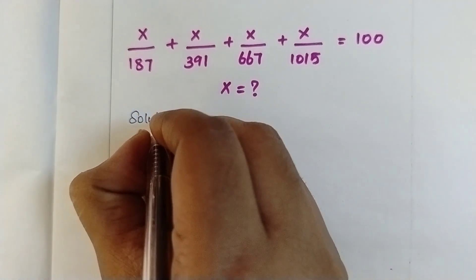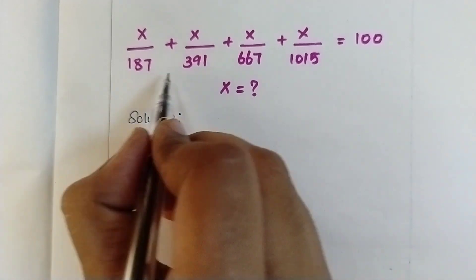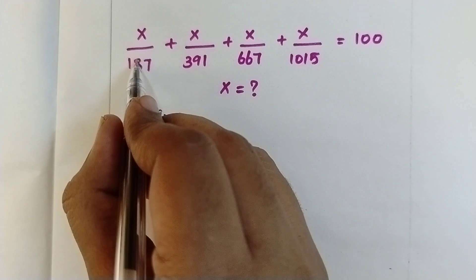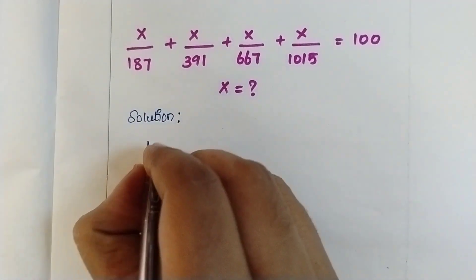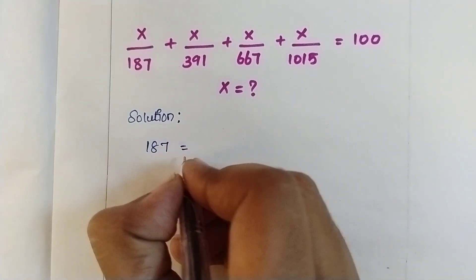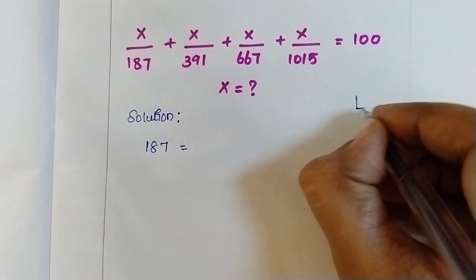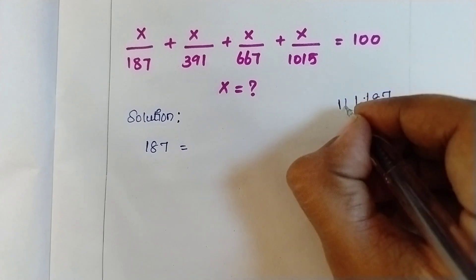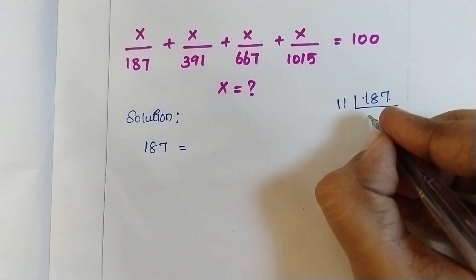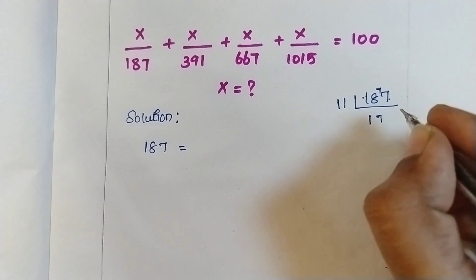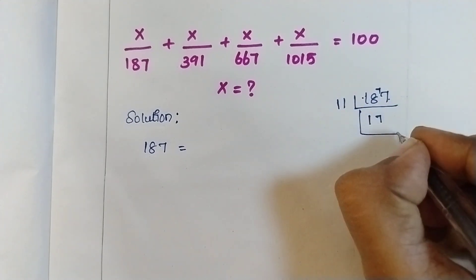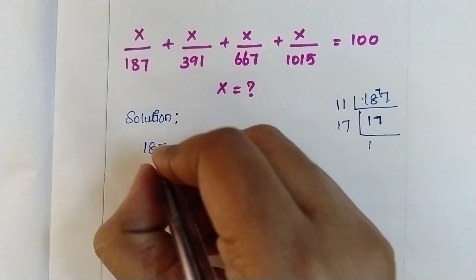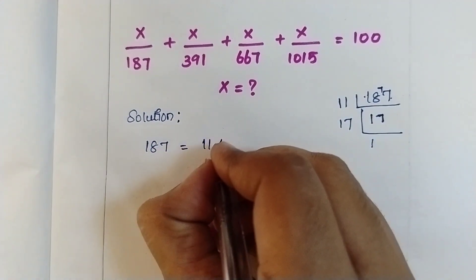To solve this problem, first we need to know the multiples of the denominator numbers. So first I am going to take 187. We need to find the factors using LCM. So this will come in the 11 table — 1 eleven is 11, balance 7, 7 elevens are 77 — and it comes in the 17 table one time. So the multiples of 187 are 11 into 17.